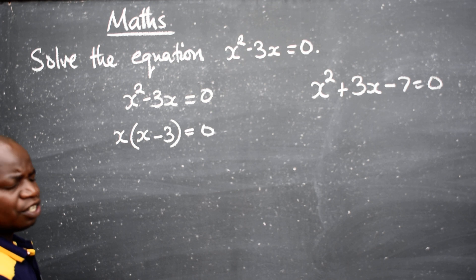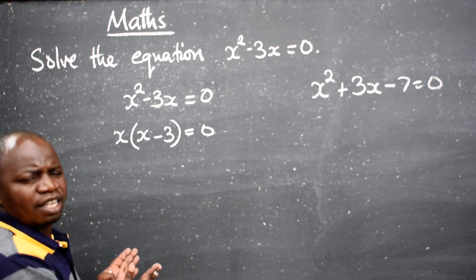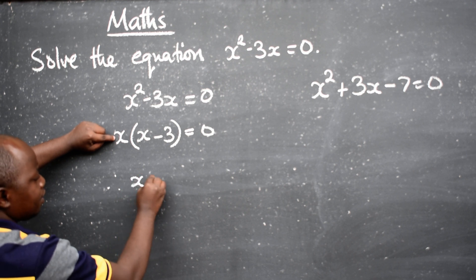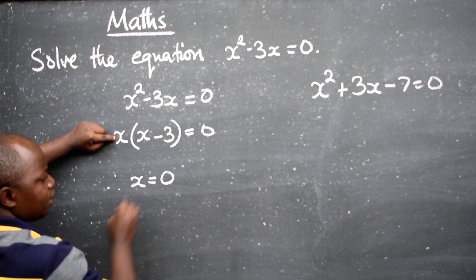At this stage, you equate. Outside the bracket, it equates to zero. So we say, therefore, x is equal to zero. That's the first one.